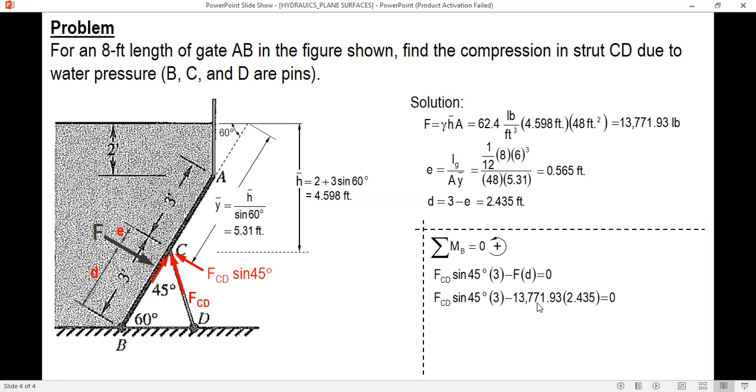So next step is transpose these terms to the right, and then divide it by the coefficient of FCD, this one function, and then compute. The value of the force in strut CD is equal to 15,808.38 pounds.